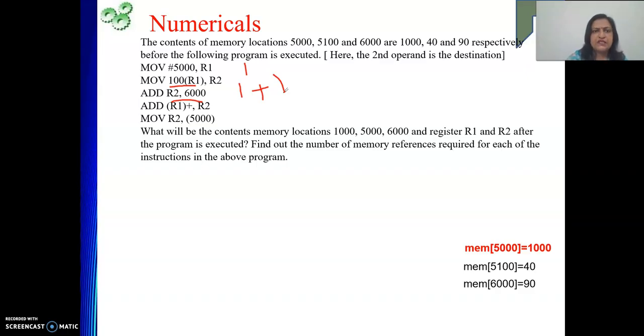After performing the operation, result need to be written to the memory location 6000. So 1 more plus 1. So total is 3. This is for this one. For this one, it was 2. For this one, it is 3. For first one, it is 1.